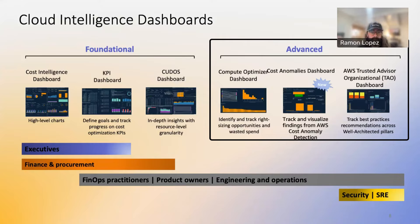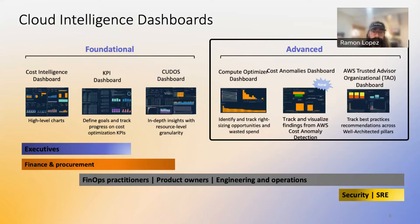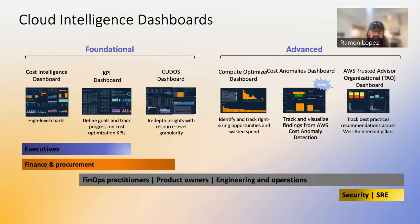The advanced dashboards align with other AWS services. You have the Compute Optimizer dashboard looking at right-sizing opportunities and wasted resource spend. There's the Cost Anomaly dashboard, which leverages cost anomaly detection to identify spikes or changes in usage data. And if you're working with Trusted Advisor, there are TAO dashboards that go hand in hand with Trusted Advisor and the Well-Architected pillars to provide security teams additional details.